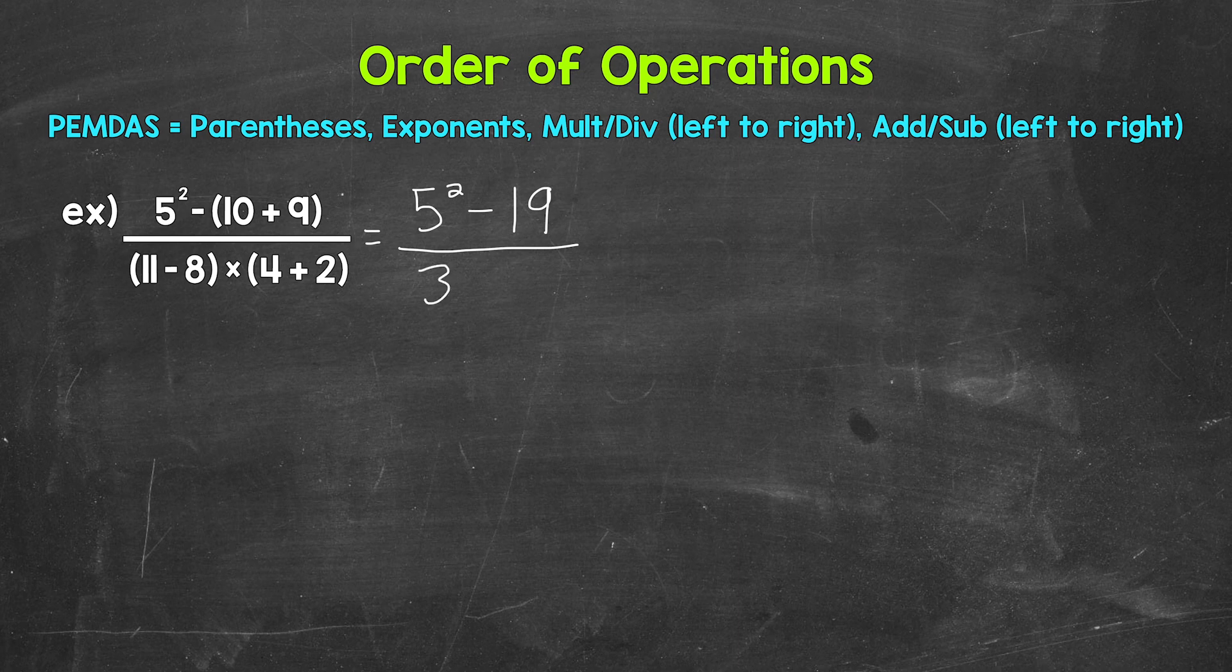So we have 3 times, and then the second set of parentheses, we have 4 plus 2. That gives us 6. So now we have 3 times 6, below the fraction bar.